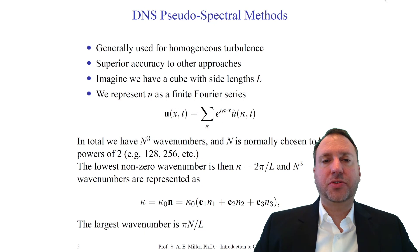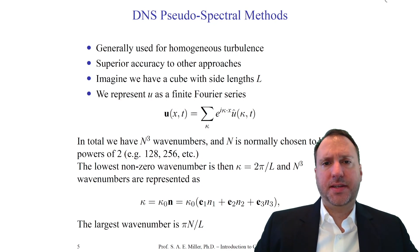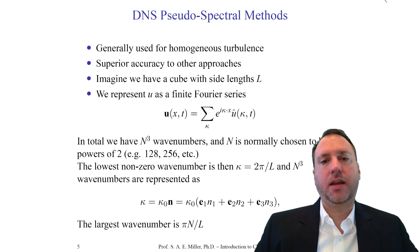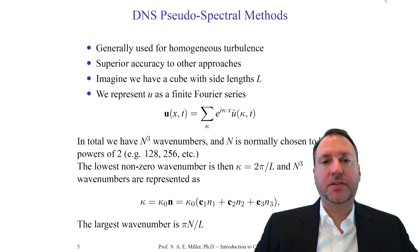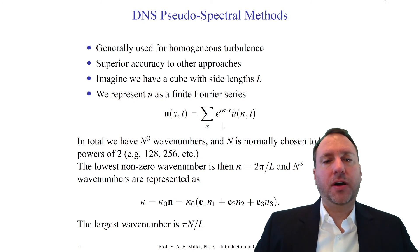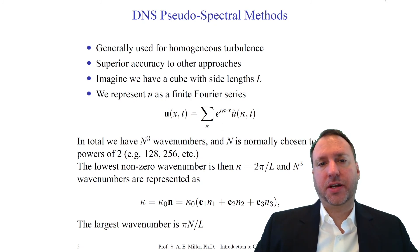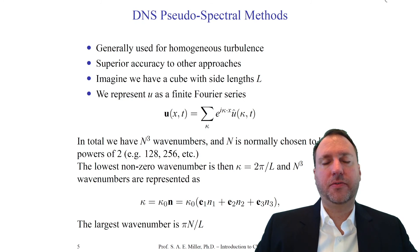Spectral approaches require certain constraints on the domain. DNS today is used almost entirely in research to study turbulence itself. Only in very low Reynolds number laminar or creeping flows would DNS typically be used to study the physics or make predictions in a research environment. We'll use this technique because of its advantages and widespread use in the research community.